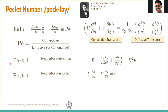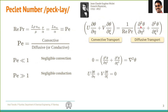To interpret the limits of the Péclet number, consider Pe ≪ 1 first. This means convective transport is much smaller than diffusive or conductive transport — molecular transport dominates bulk transport. When the convective term is negligible, we are left with ∇²θ = 0, which is the Laplacian for temperature.